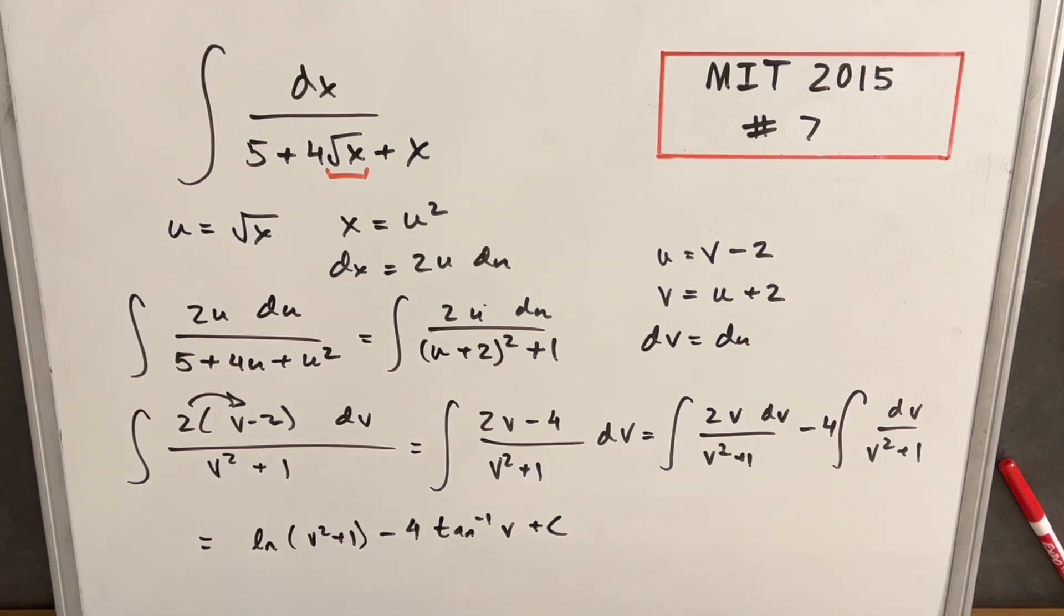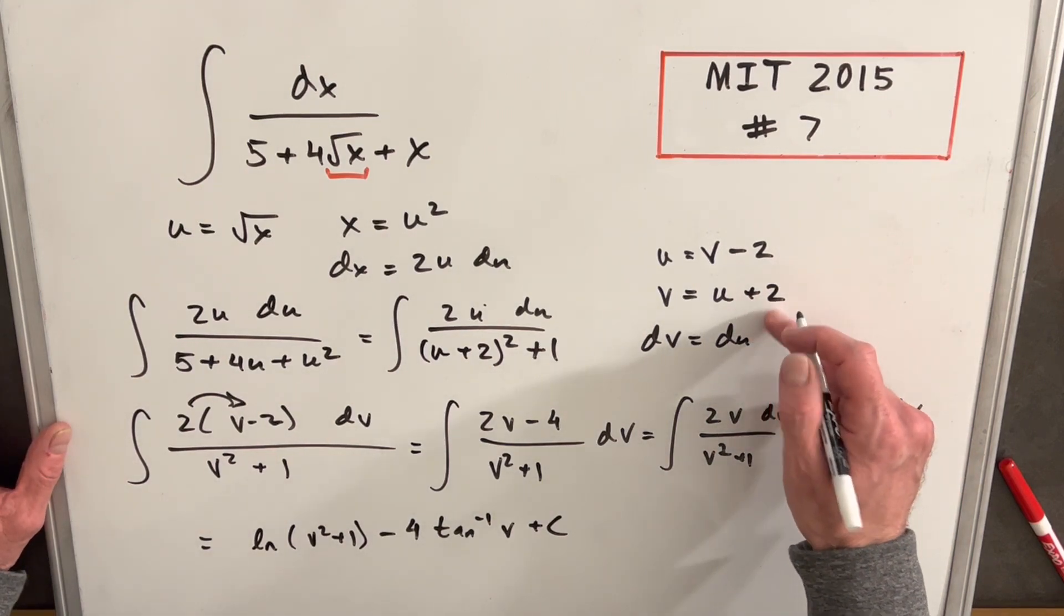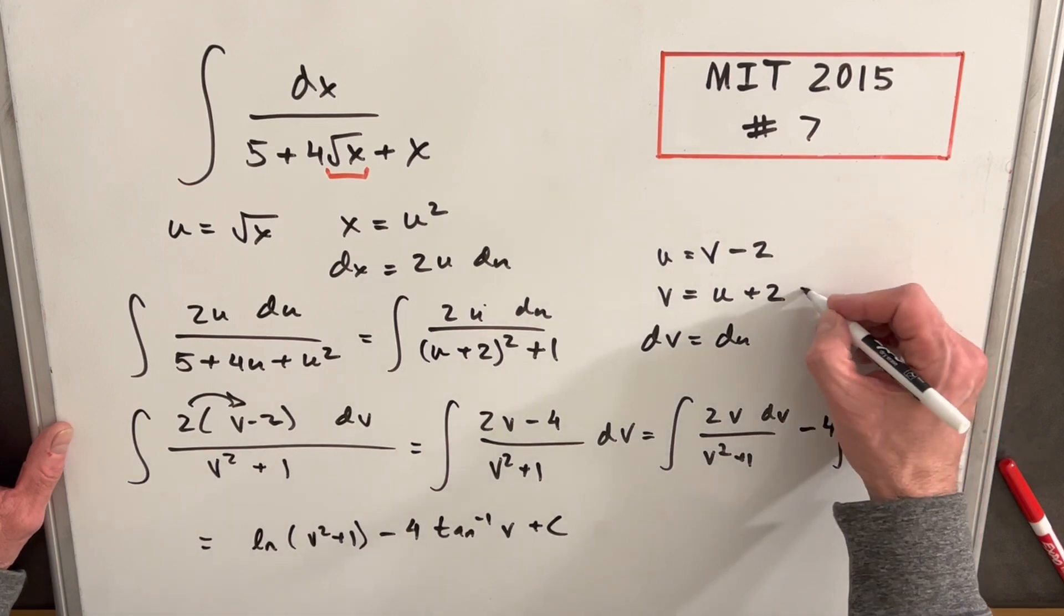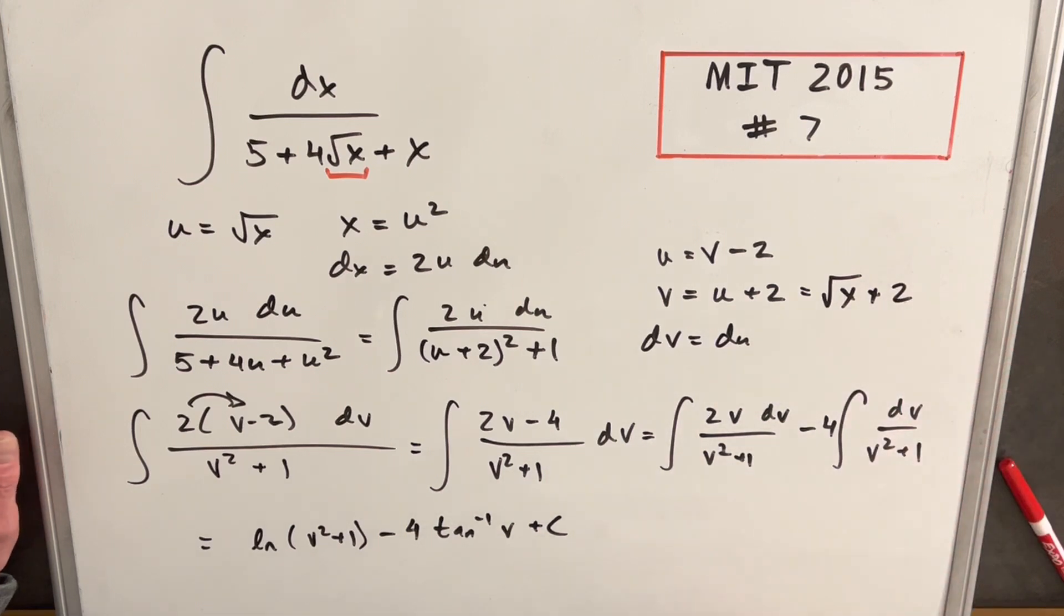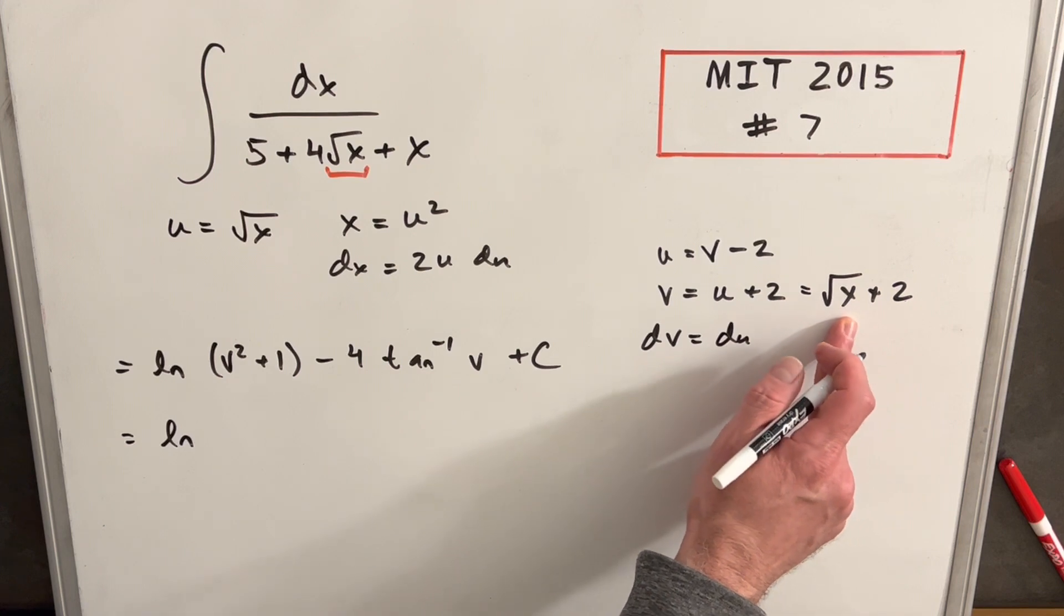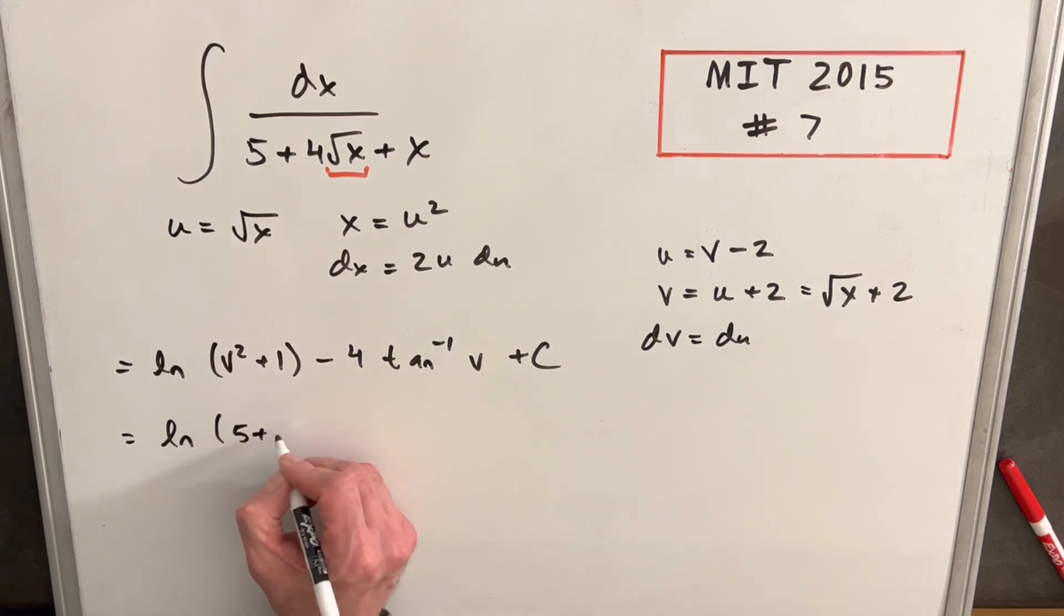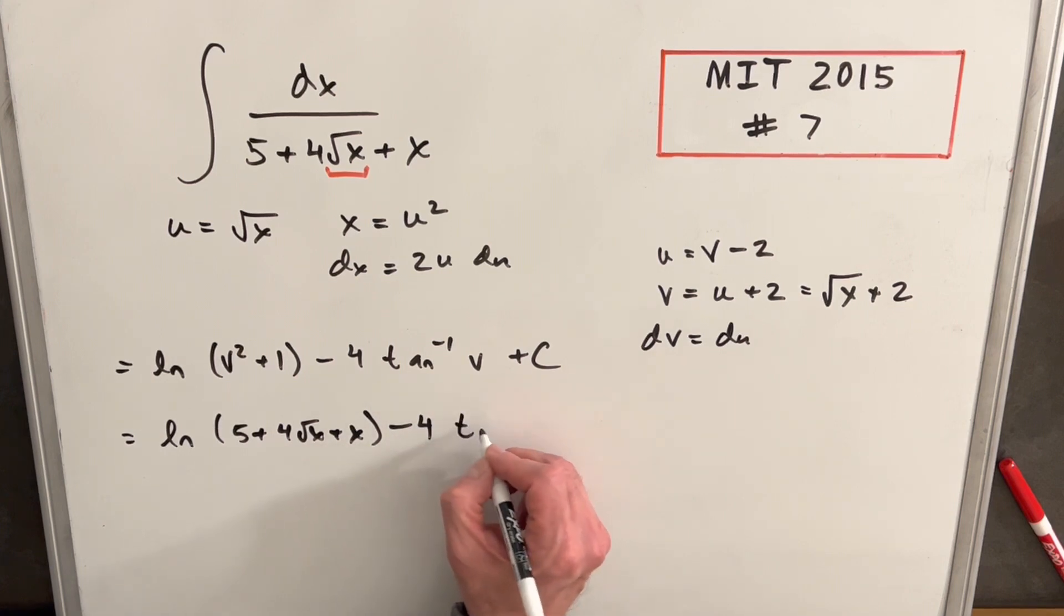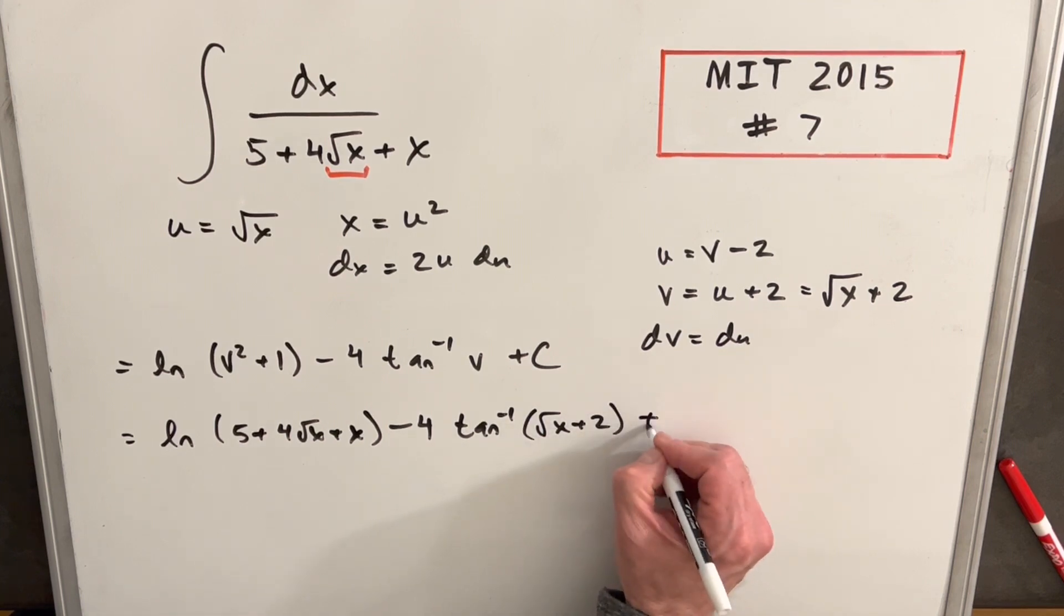Now we just need to back substitute this whole thing and finish it off. I think what I want to do is do this in one step. We can look at our v. We're going to back substitute v. v is u plus 2. But then we're going to have to just substitute again. So what I can do is u is actually square root of x. So to do this in one step, we can say v is square root of x plus 2. And now we just need to back substitute to finish this off. So we're going to have natural log v squared plus 1. v squared plus 1 actually just takes us back to what we had in the denominator here. If you square that out and add 1, you get back our 5 plus 4 square root of x plus x. And we have a minus 4 tan inverse. And our v is just square root of x plus 2 plus c.